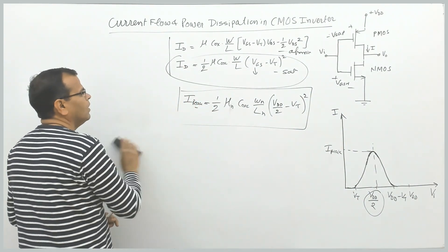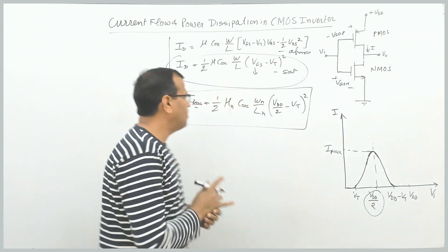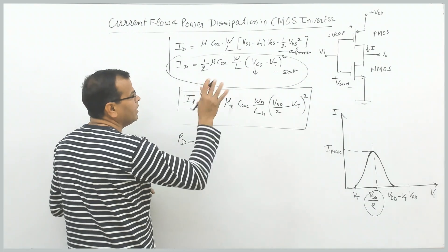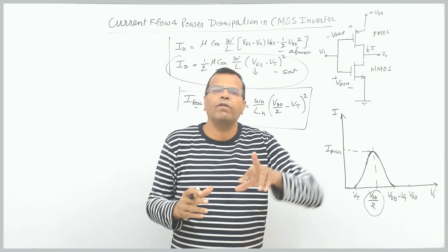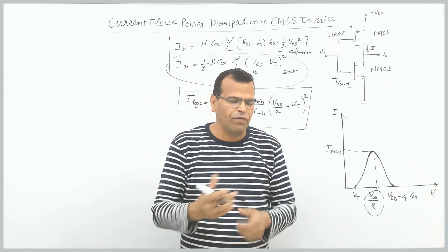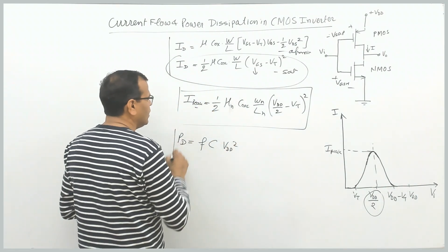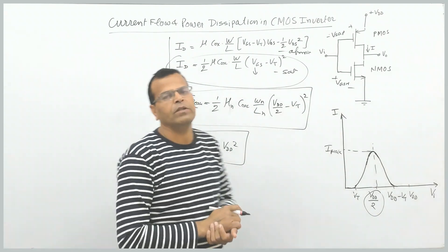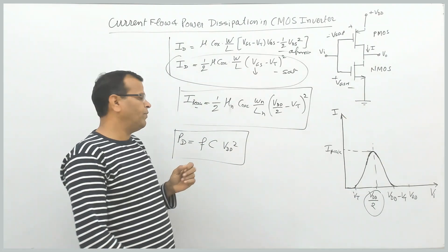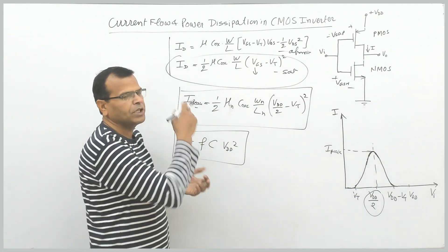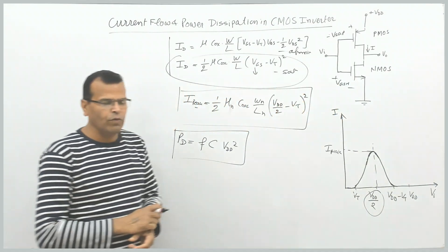Now let us talk about power dissipation. The power dissipation in CMOS is given by P = f × C_out × V_DD², where f is frequency. This depends on frequency because we are talking about dynamic behavior — switching on and off. For maximum power dissipation, f_max is used. That is the expression of power dissipation in the CMOS inverter circuit.